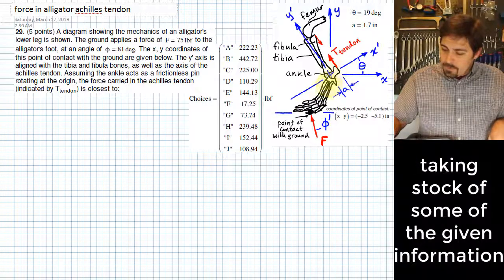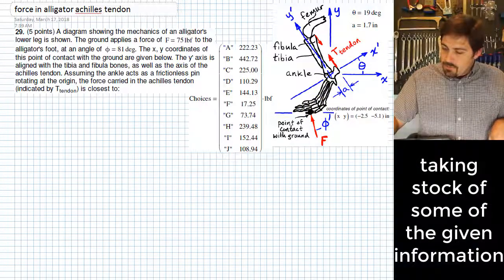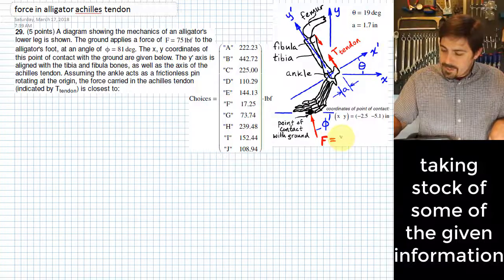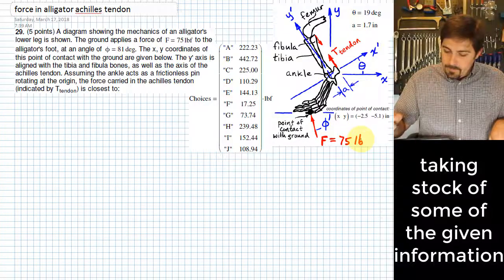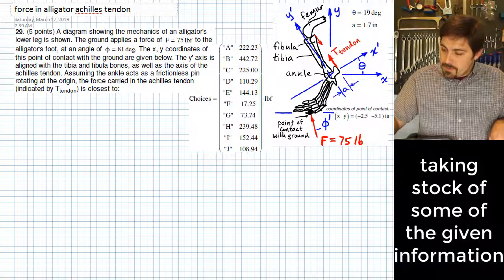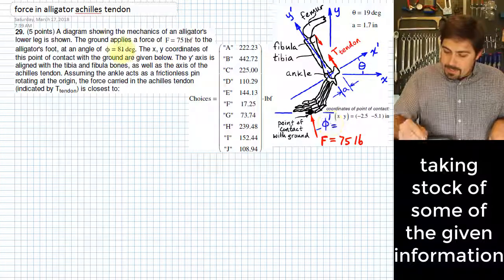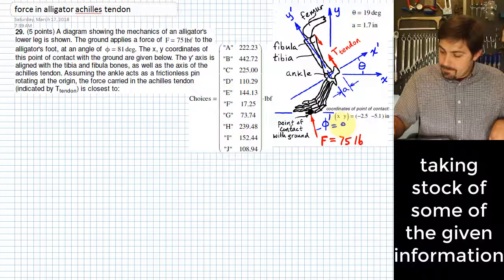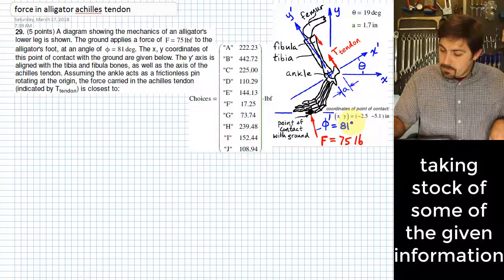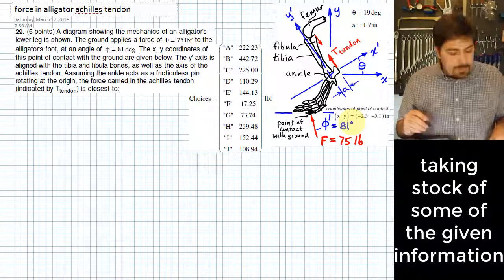We have this foot over here of the alligator. There is a force down here of 75 pounds. There's also this angle over here that is known, it is 81 degrees. So we'll go ahead and start by showing a couple of things that we know over there.